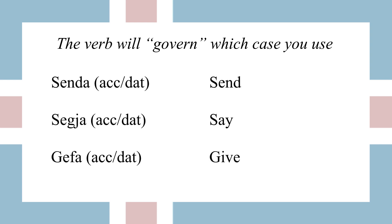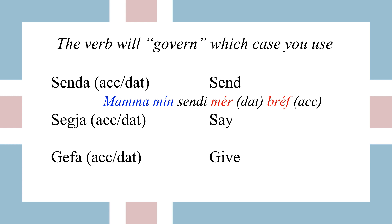There are a couple of verbs that take two cases, which means the verb can take two objects. For example, senta — to send — you can send someone something. Whatever you're sending, whether it's a letter or an email, is going to be in accusative. And whoever you're sending it to will be in dative. So 'mama min senti mier brev' — my mom sent me a letter — where mier is dative and brev is accusative. The same thing goes for seya, to say, and geva, to give — whatever you're giving is accusative and whoever you're giving it to is dative.